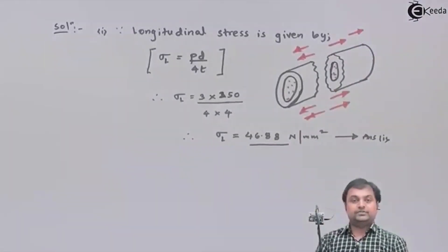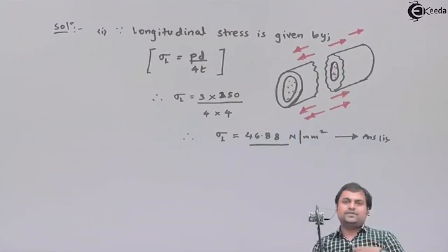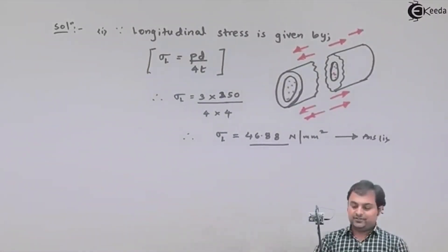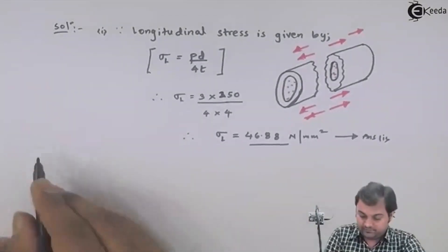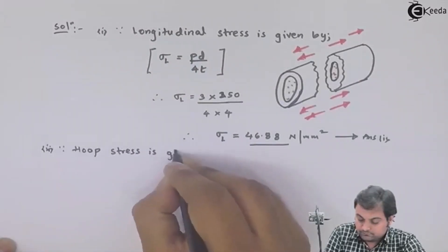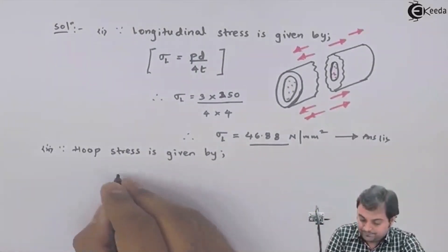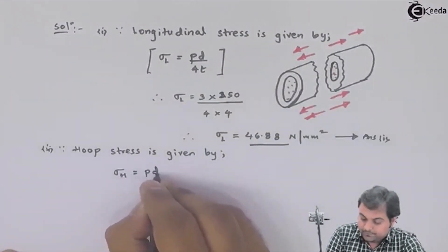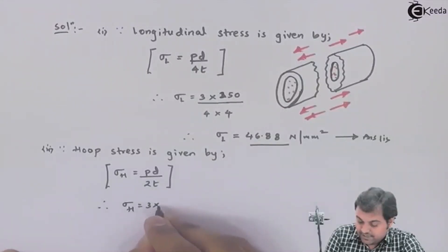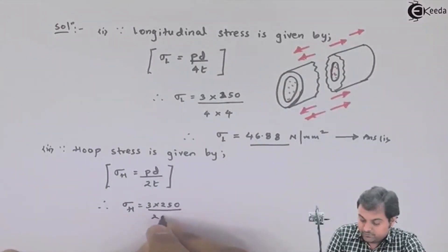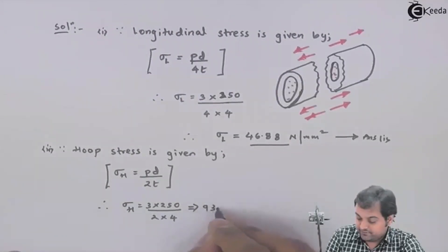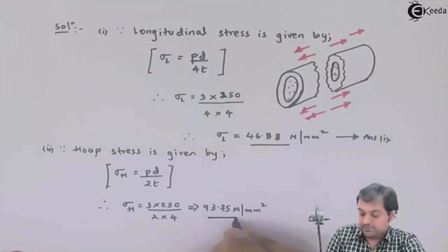In longitudinal stress, if the stress value exceeds the resisting capacity of the cylinder walls, it would break the cylinder into two halves along its length. That is the effect of longitudinal stress. Now for hoop stress: sigma H = PD upon 2t. With P = 3, diameter = 250, and thickness = 4 mm, hoop stress comes out to be 93.75 Newton per mm squared.